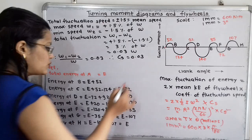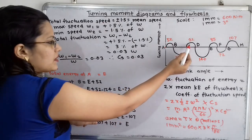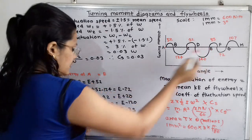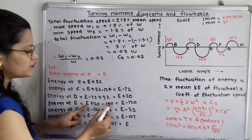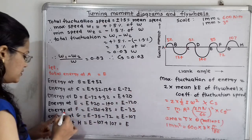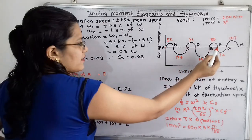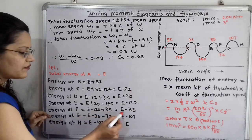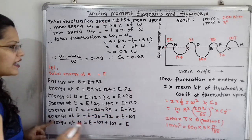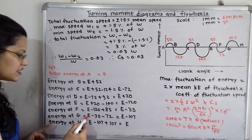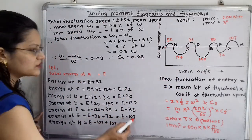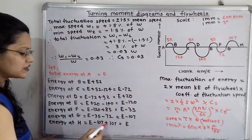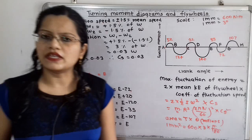Energy at E = E + 20 − 140 = E − 120. Energy at F = E − 120 + 85 = E − 35. Energy at G = E − 35 − 72 = E − 107. Energy at H = E − 107 + 107 = E. So the cycle closes back to E, which confirms the calculation is consistent.